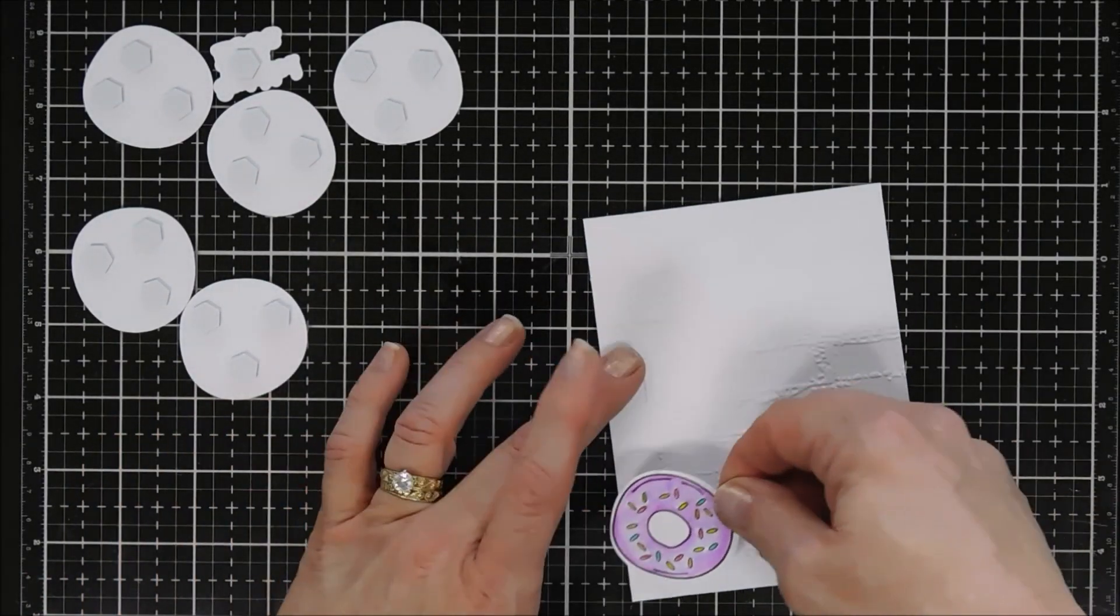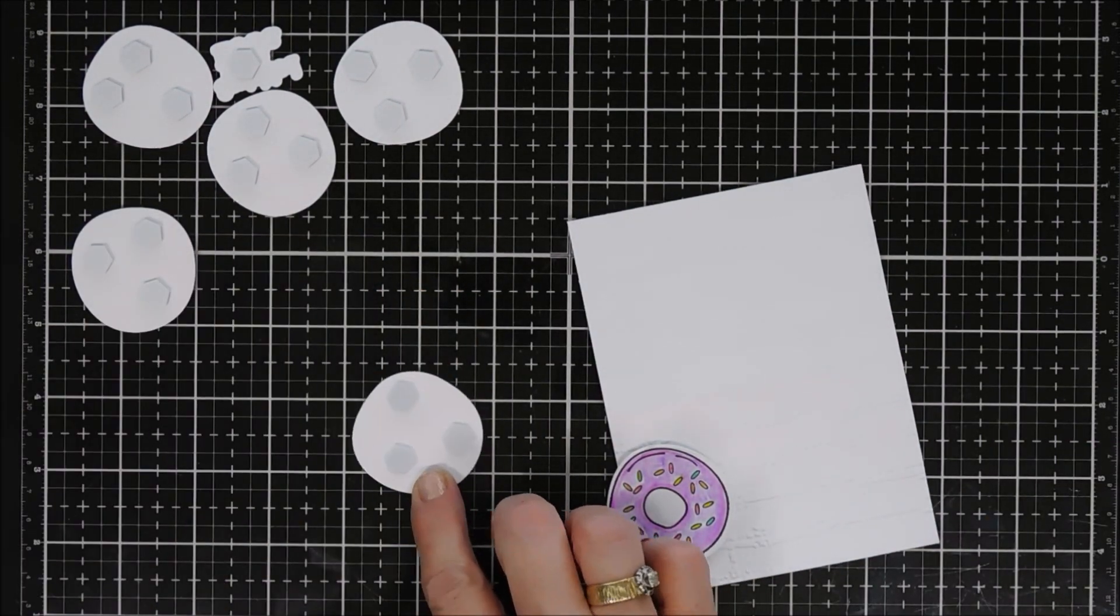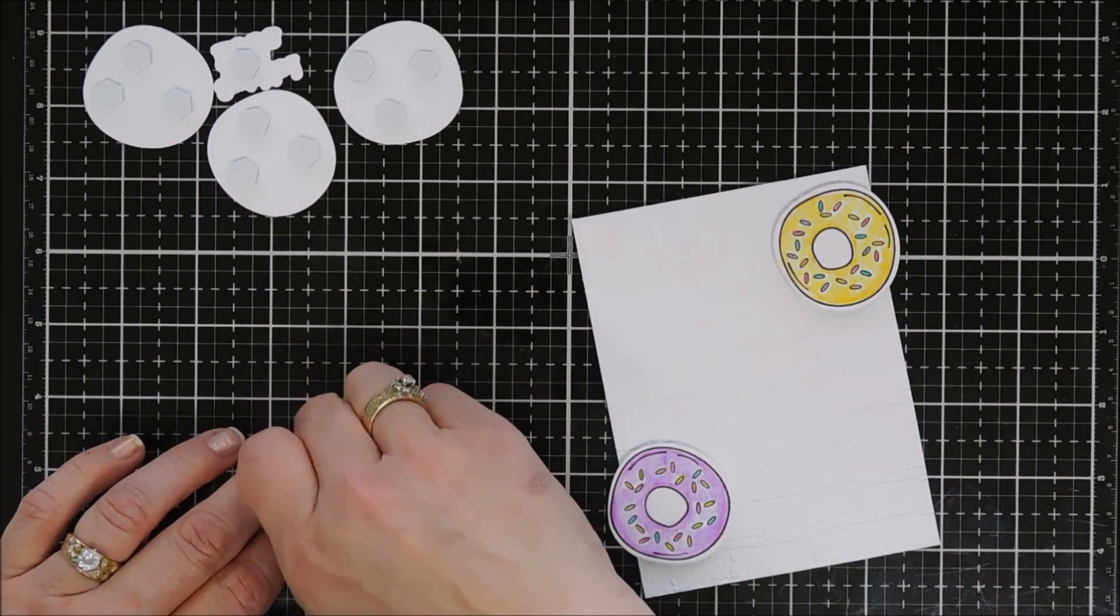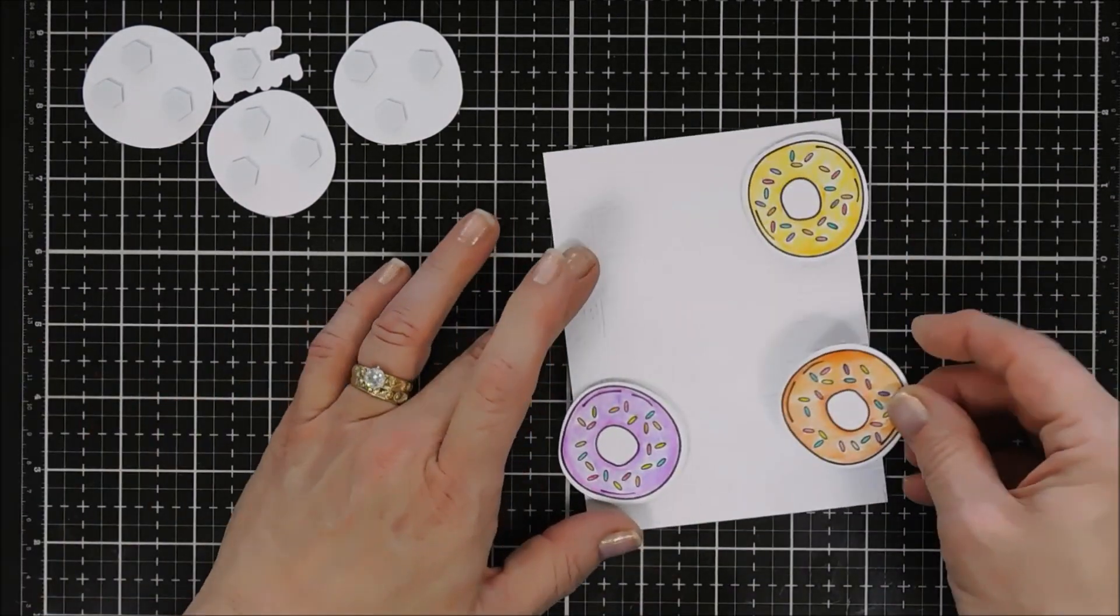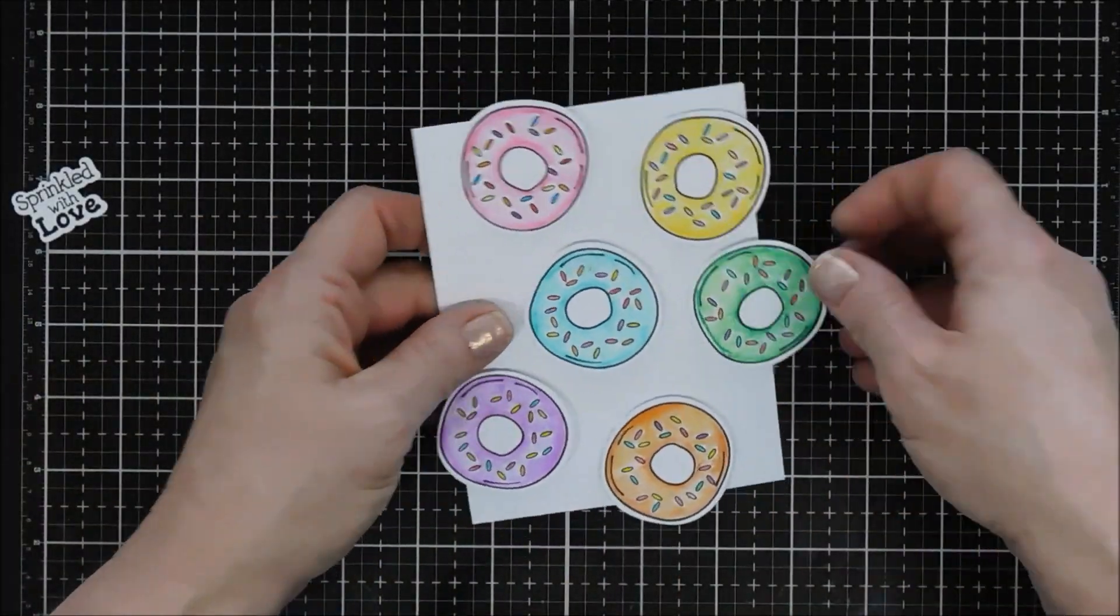I'm going to fill in my entire background panel here with all the different variety of donuts. I'm not pressing them down in place just yet, only because I want to make sure I have the right placement before they're adhered. I think this is going to look great.